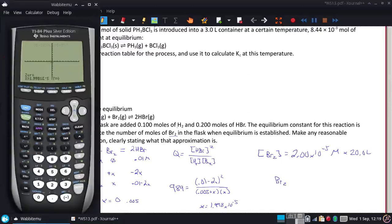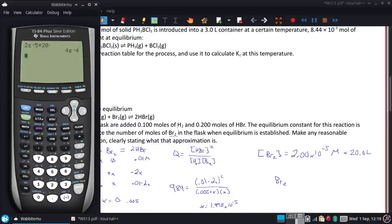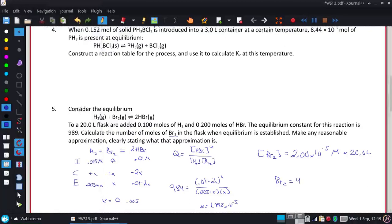2 times 10 to the negative 5th times 20. Moles is 4.00 times 10 to the negative 4th. And it will just be moles.